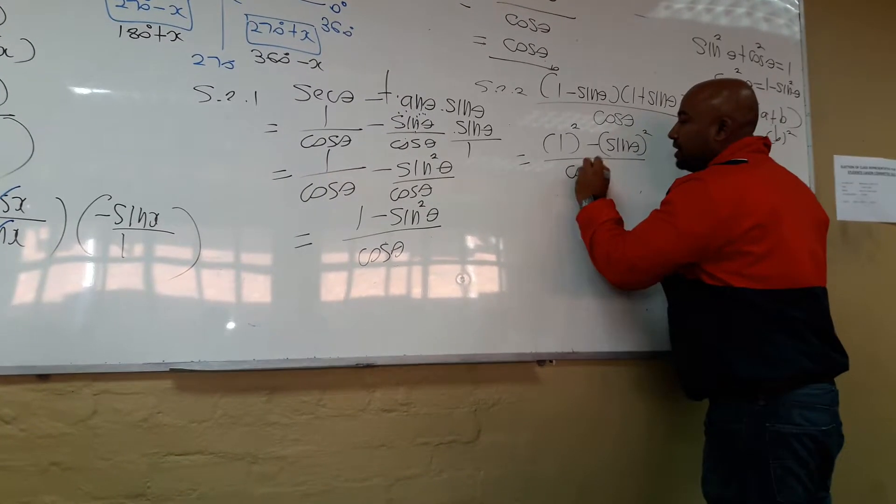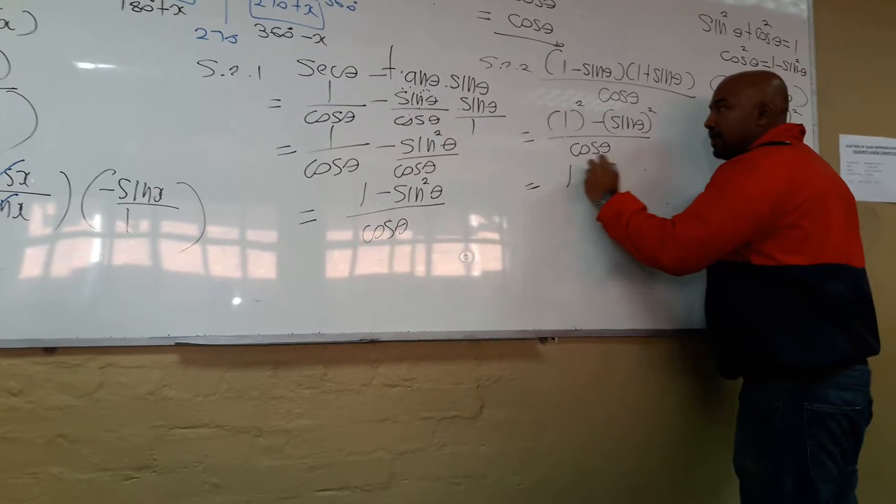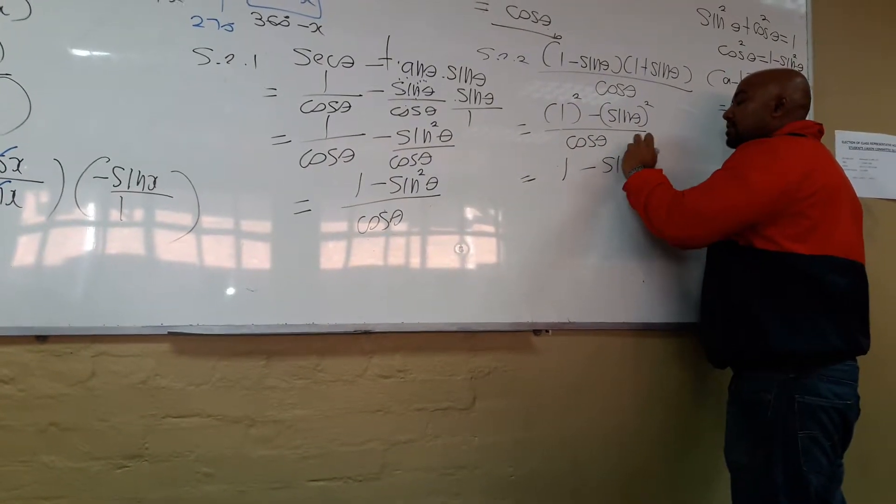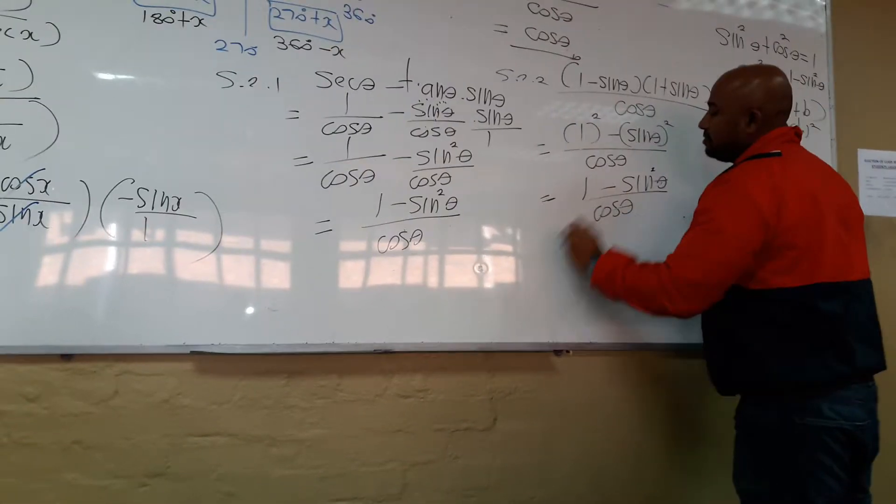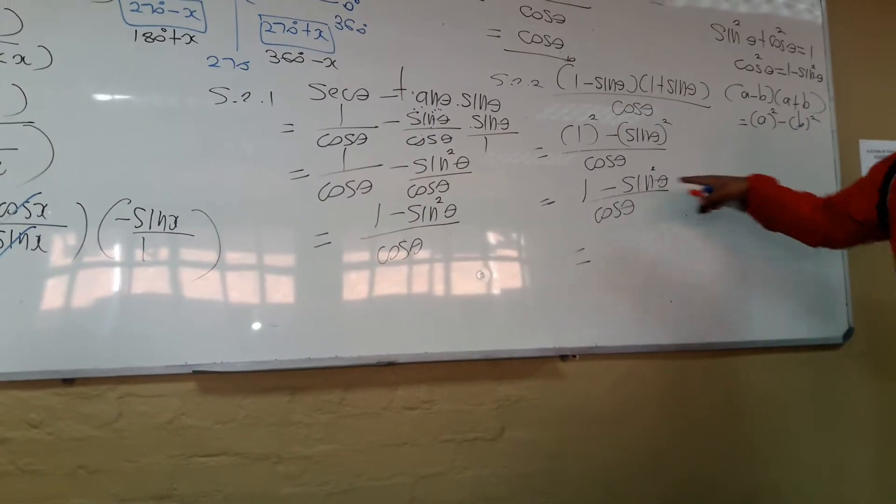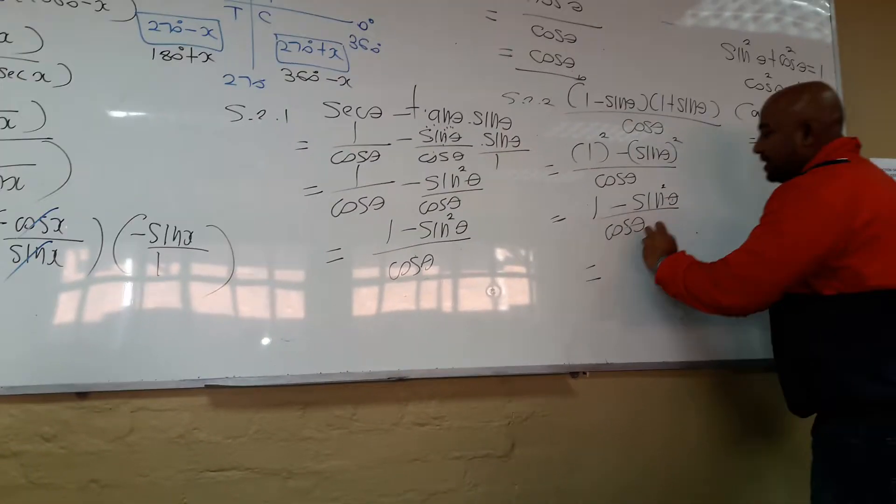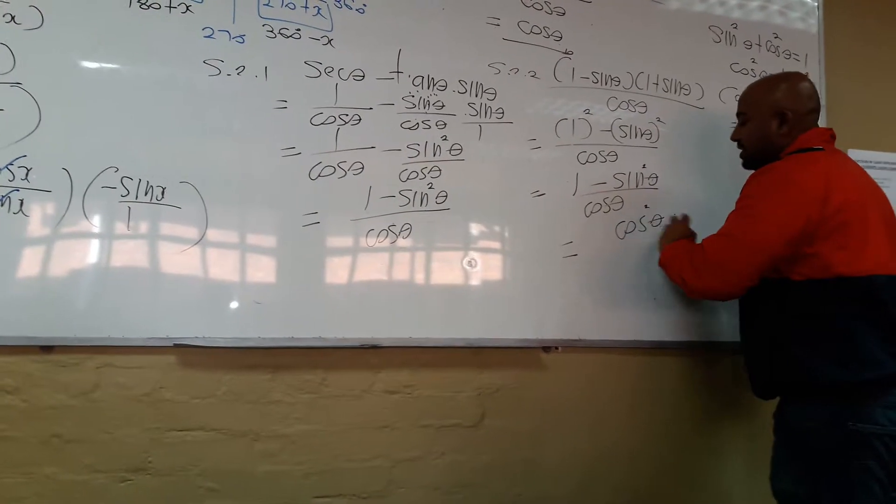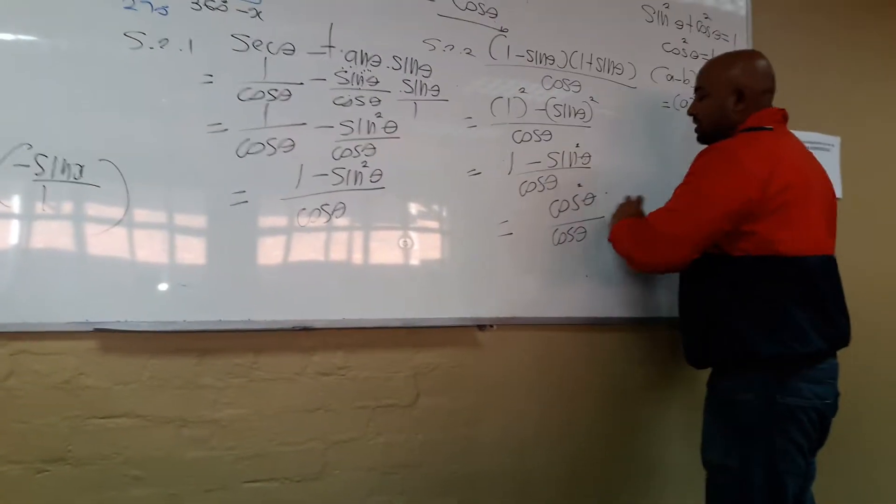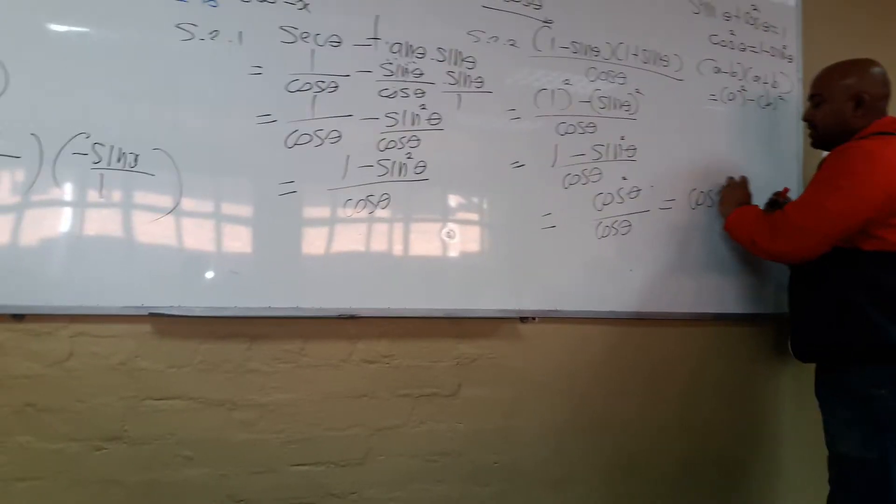A squared minus B squared. Can you see that? Divided by cosine. So what is 1 squared? 1 minus sine squared. Again. 1 minus sine squared we had, we just had the same thing. Cosine squared. 1 minus sine squared is cosine. Cosine squared all divided by cosine. Cosine squared divided by cosine is cosine.